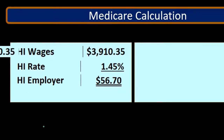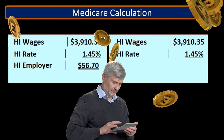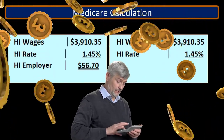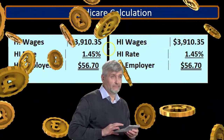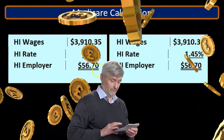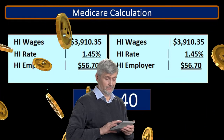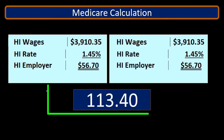If we do that again for the employer portion, HI wages times 0.0145 also gives $56.70. Then if we add those two up, we come up with $113.40. So this is the employer and employee portion combined.